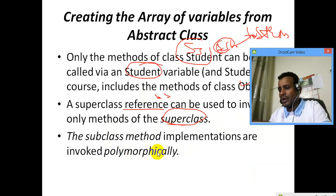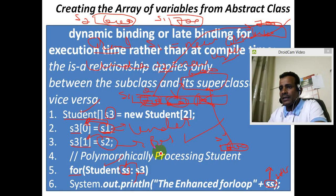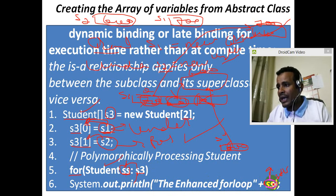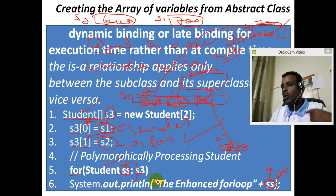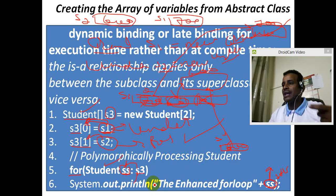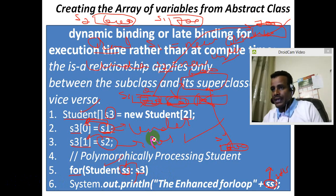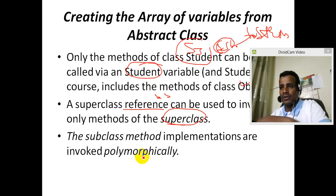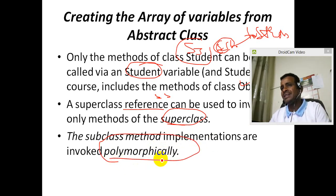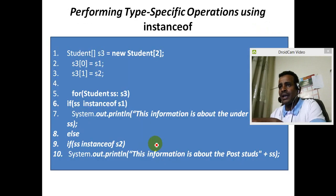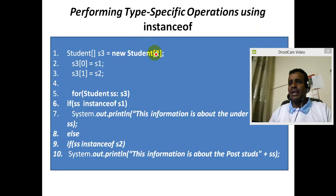Polymorphically — what is the name? SSL toString is called. Undergraduate. Postgraduate. Polymorphically, one by one. Polymorphic processing — the subclass implementations are invoked polymorphically. The toString method is polymorphically invoked. Performing type-specific operations using instanceof.